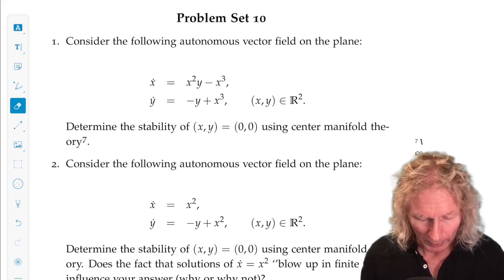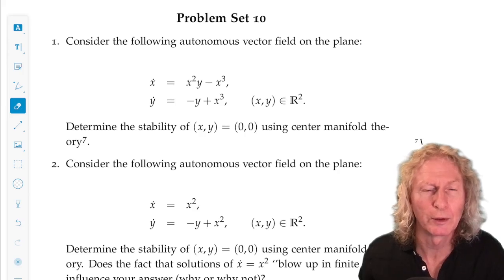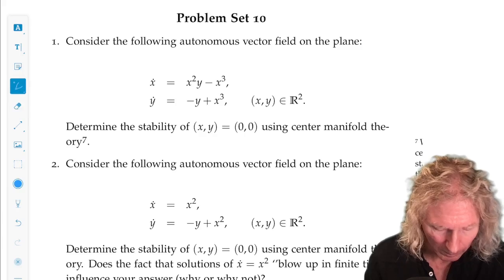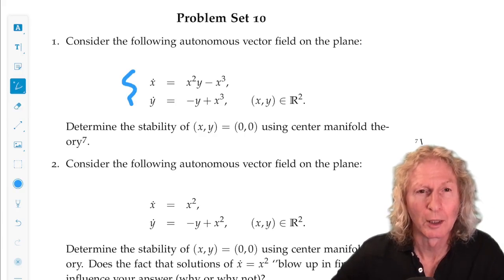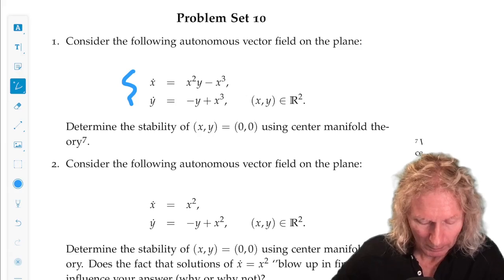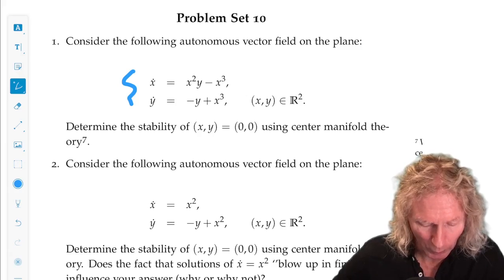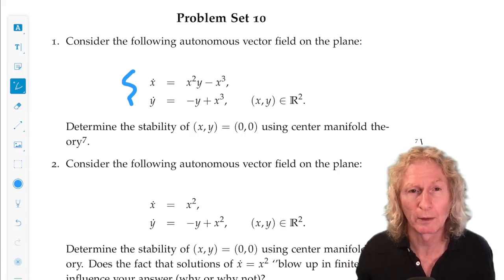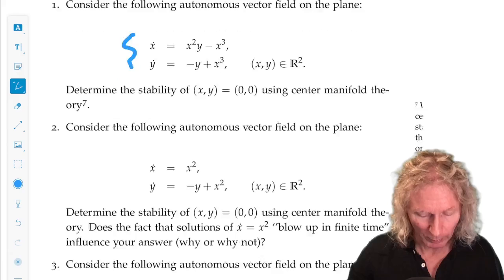So the first example is in line with the two examples I did in the chapter, a two-dimensional autonomous vector field on the plane, and the origin is a fixed point. You can easily verify that it's non-hyperbolic and use center manifold to analyze stability of the origin.